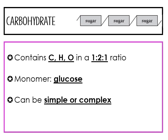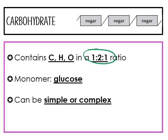A carbohydrate is a sugar. It's made of carbon, hydrogen, and oxygen, and it's always going to be in this one-to-two-to-one ratio. That's very important — it's always going to be one-to-two-to-one. Our monomer is glucose, and you can have a simple or a complex carbohydrate.